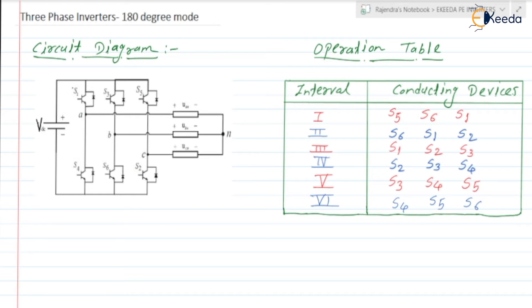There are three requirements: phase displacement of 120 degrees, equal frequency, and equal RMS and peak values. Ideally, the inverter should give a sinusoidal output, but whether it does or not will be discussed in the next video. The input is the DC voltage and it consists of six switches.